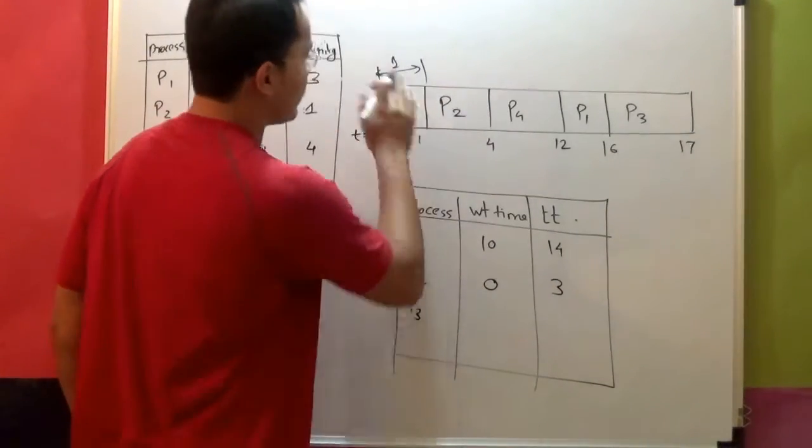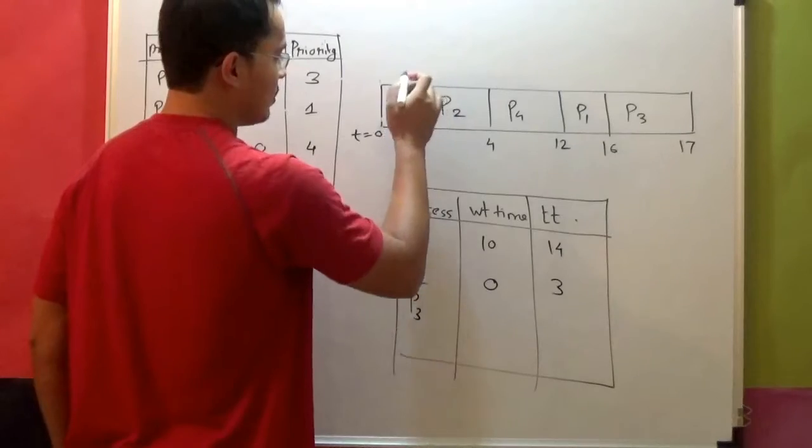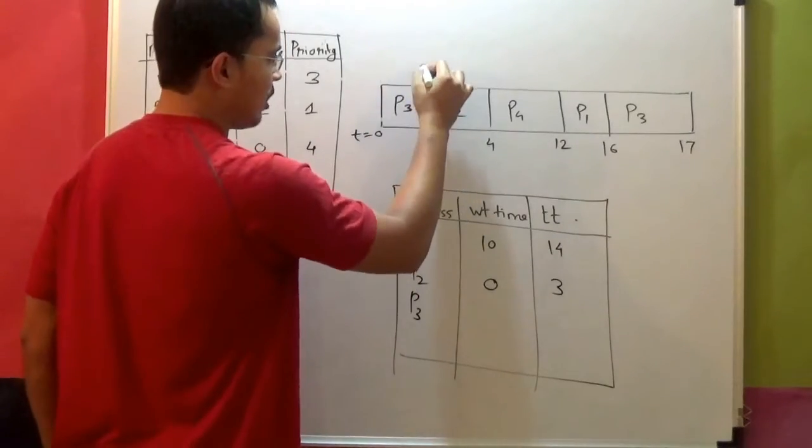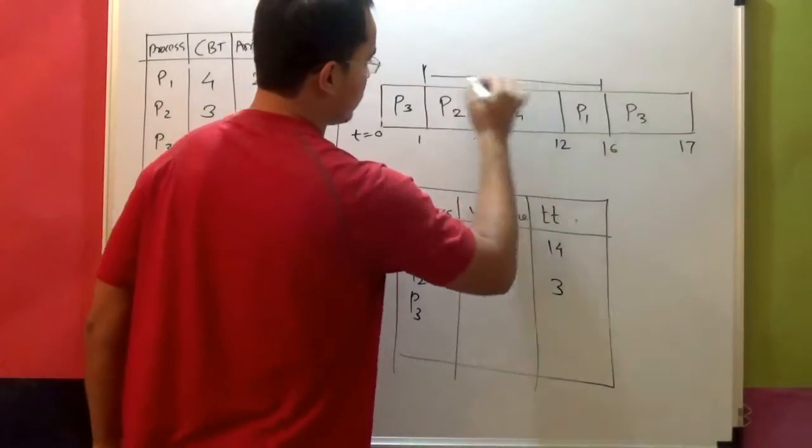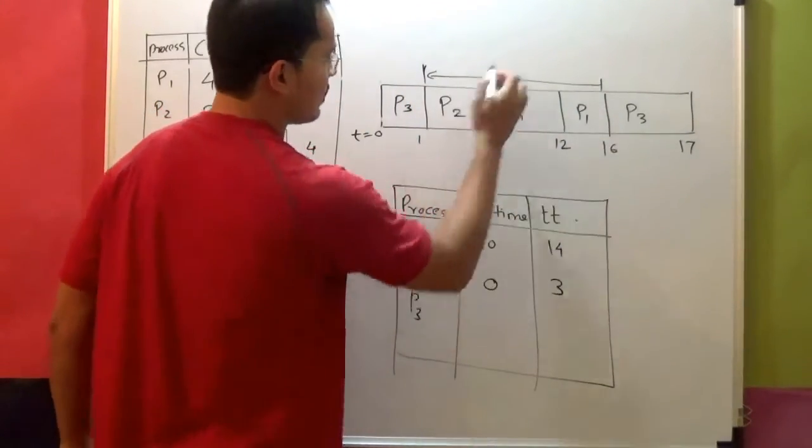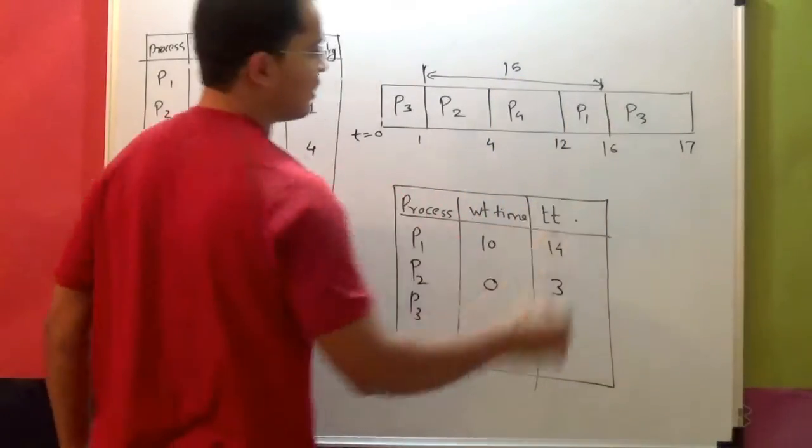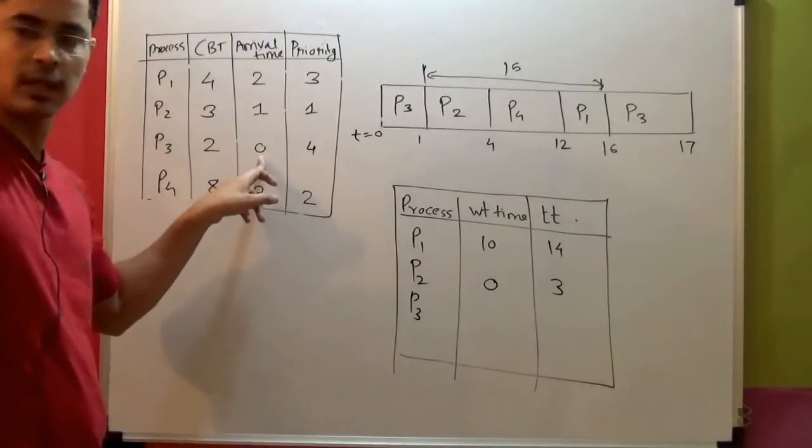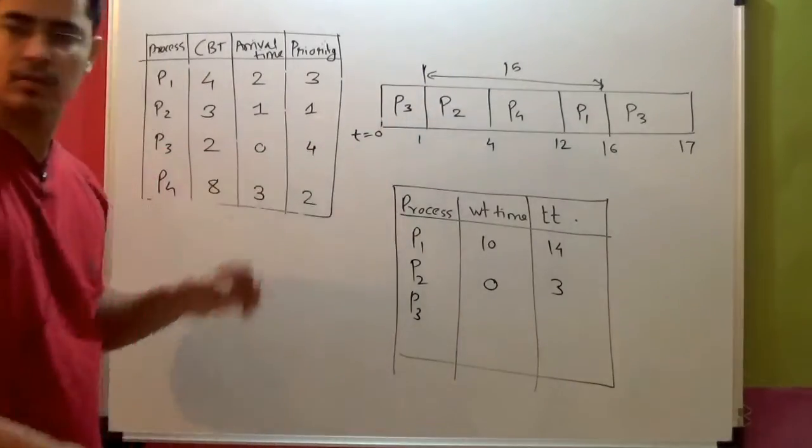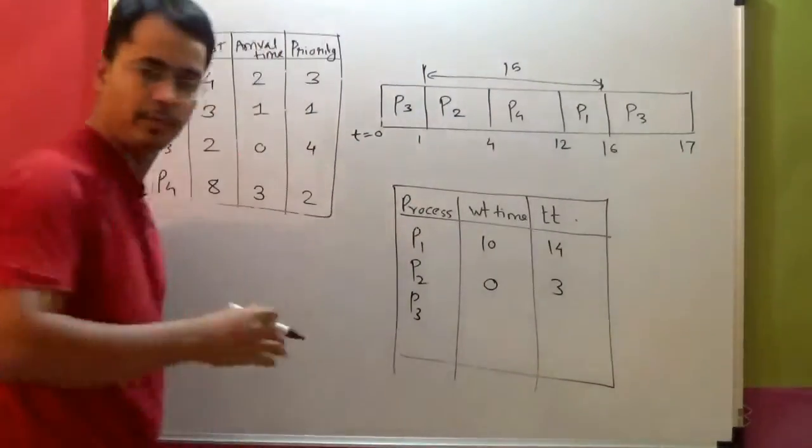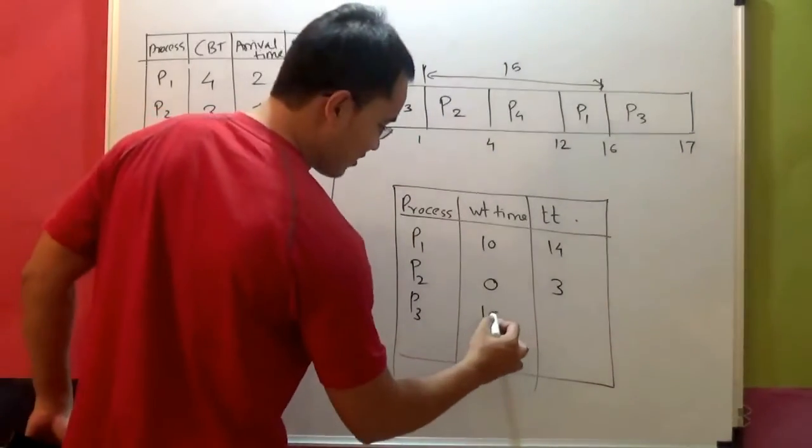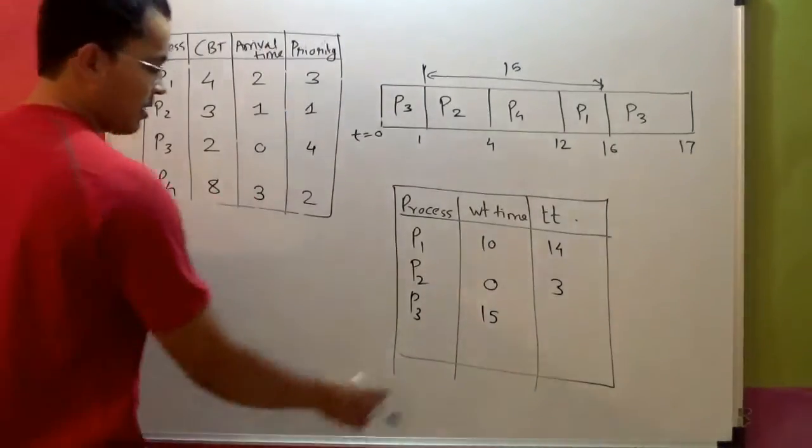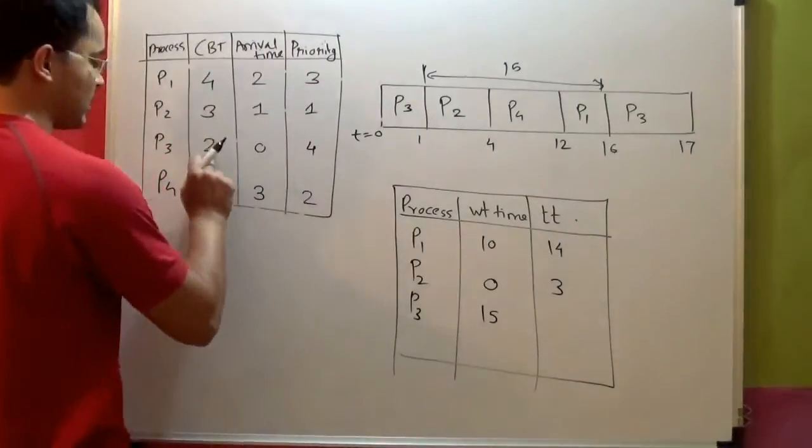P3 - P3's waiting time is, so here it started, here it stopped, and then it started again. So 16 minus 1, 15 looks like its waiting time. At what time P3 arrived? Time equal to 0. So 15 minus 0, total waiting time is 15. Turnaround time is 15 plus burst time 2, that is 17.